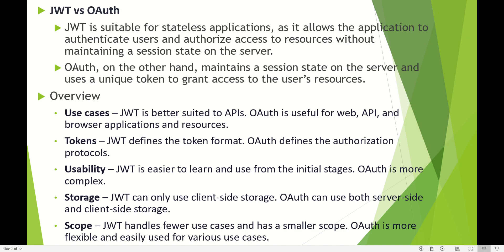Now let's compare JWT versus OAuth. JWT is suitable for stateless applications as it allows the application to authenticate users and authorize access to resources without maintaining a session state on the server — the JWT is not stored on the server but sent back to the browser. On the other hand, OAuth maintains session state on the server and uses a unique token to grant access to the user's resources. Use cases: JWT is better suited for APIs; OAuth is useful for web APIs and browser applications. JWT defines the token format; OAuth defines the authorization protocol. JWT is easier to learn and use; OAuth is more complex. JWT can only use client-side storage.